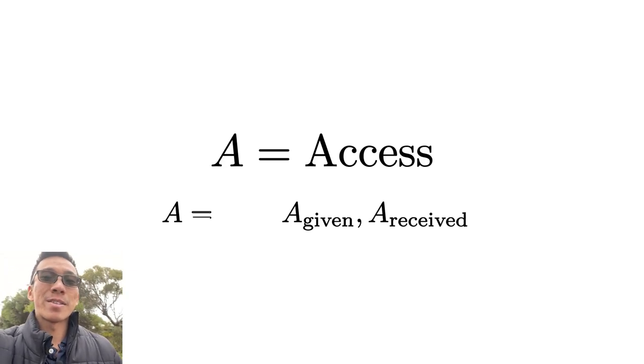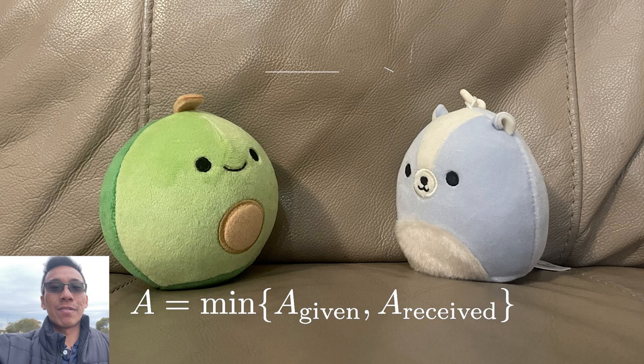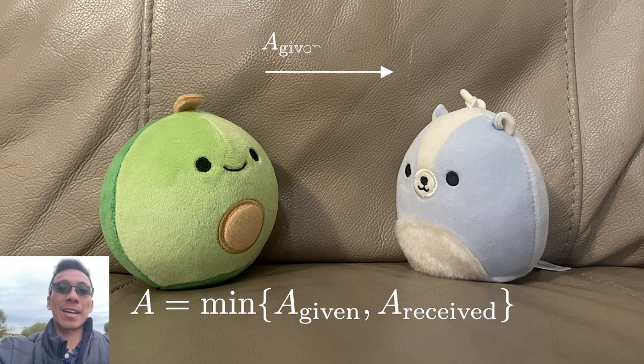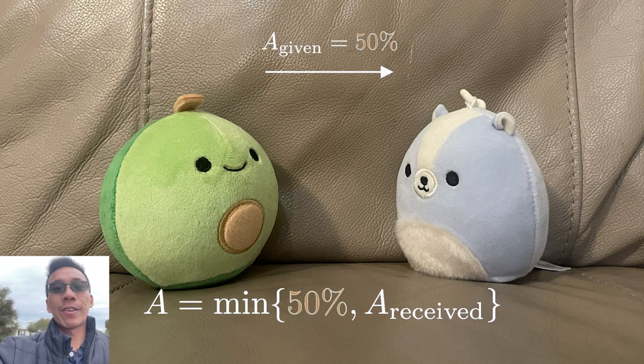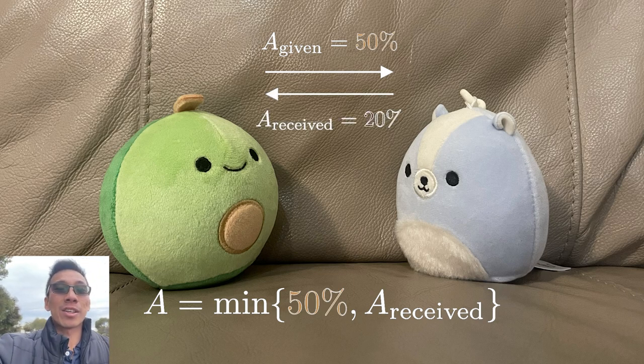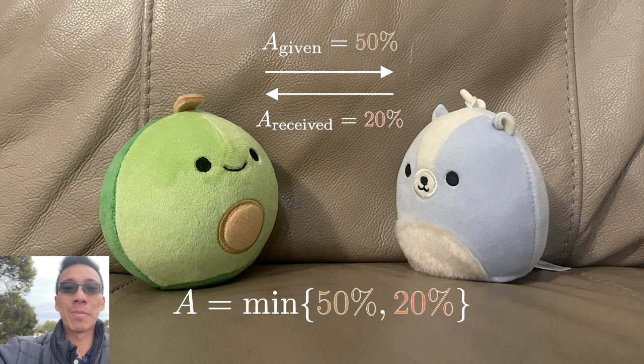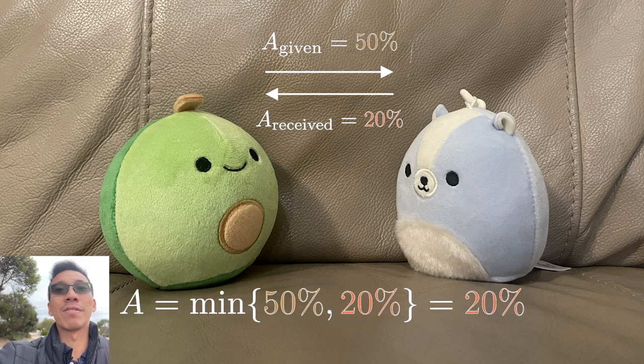The total access that is being felt is the smaller of these two numbers. So for example, if Avo gives Bruno 50% access but Avo feels that Bruno only gives 20% access, then the total access that Avo feels that exists between the two is just 20%. It's the smaller of these two numbers.